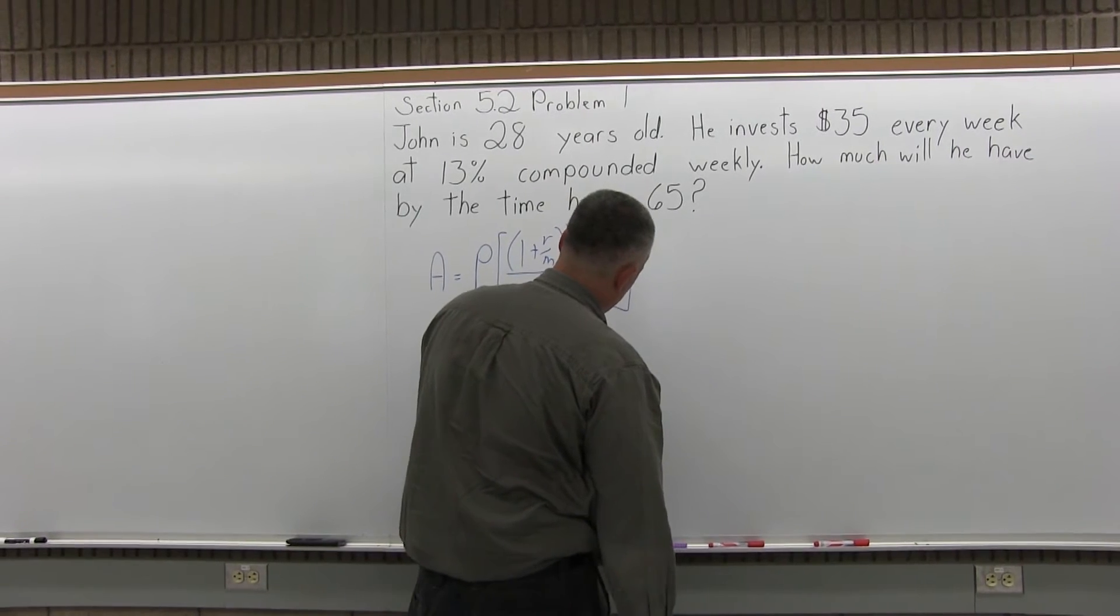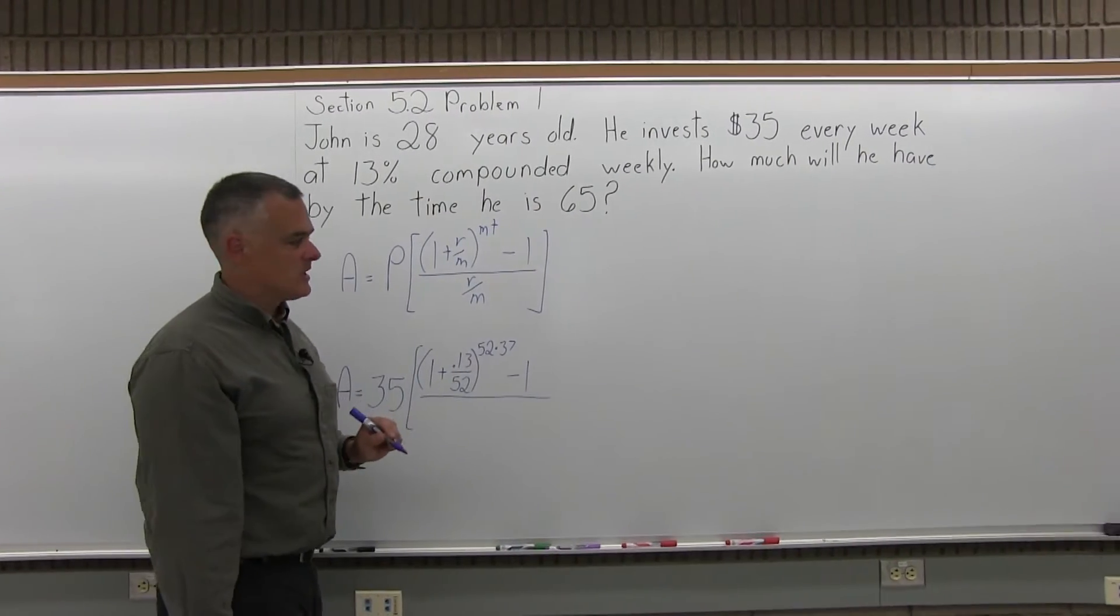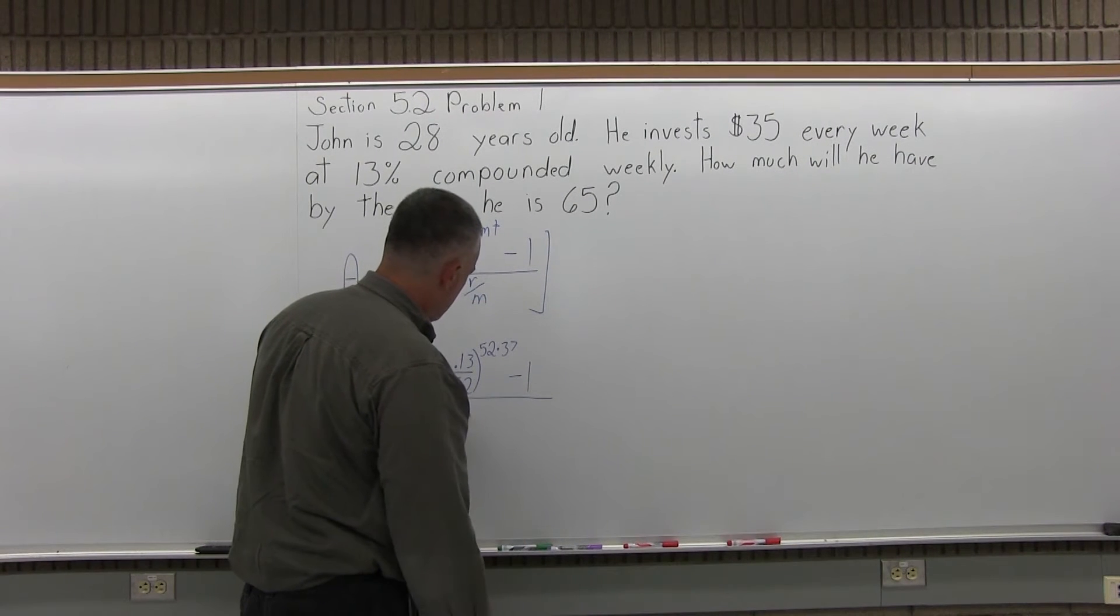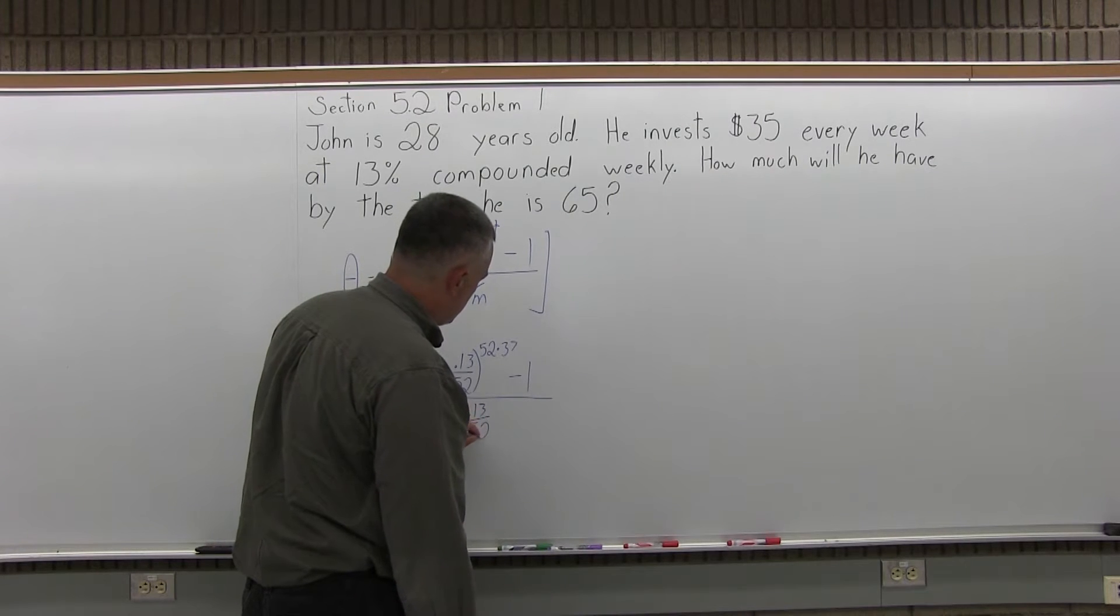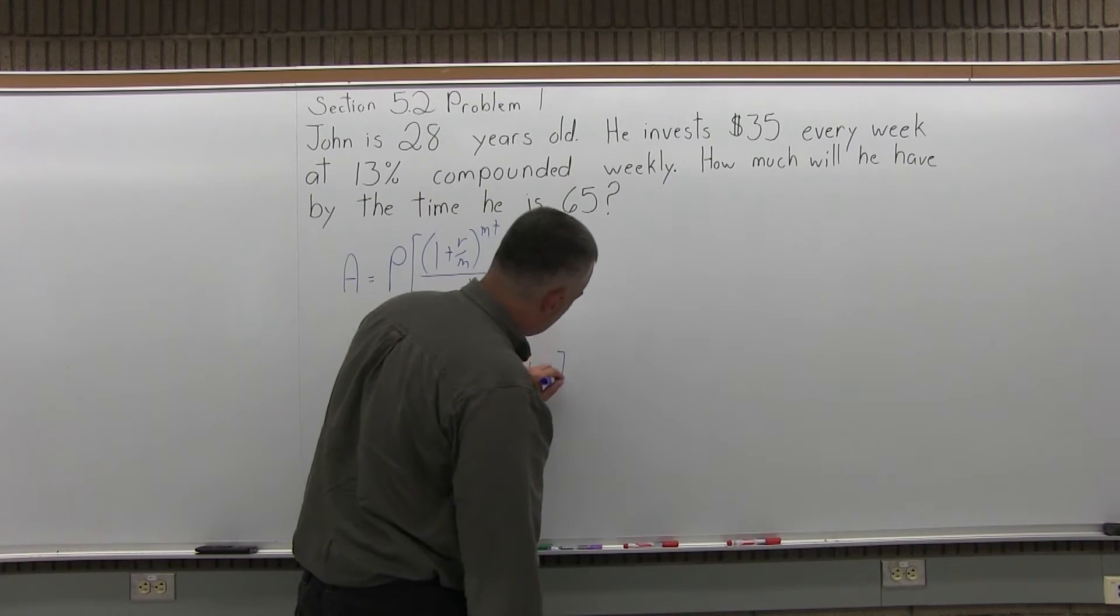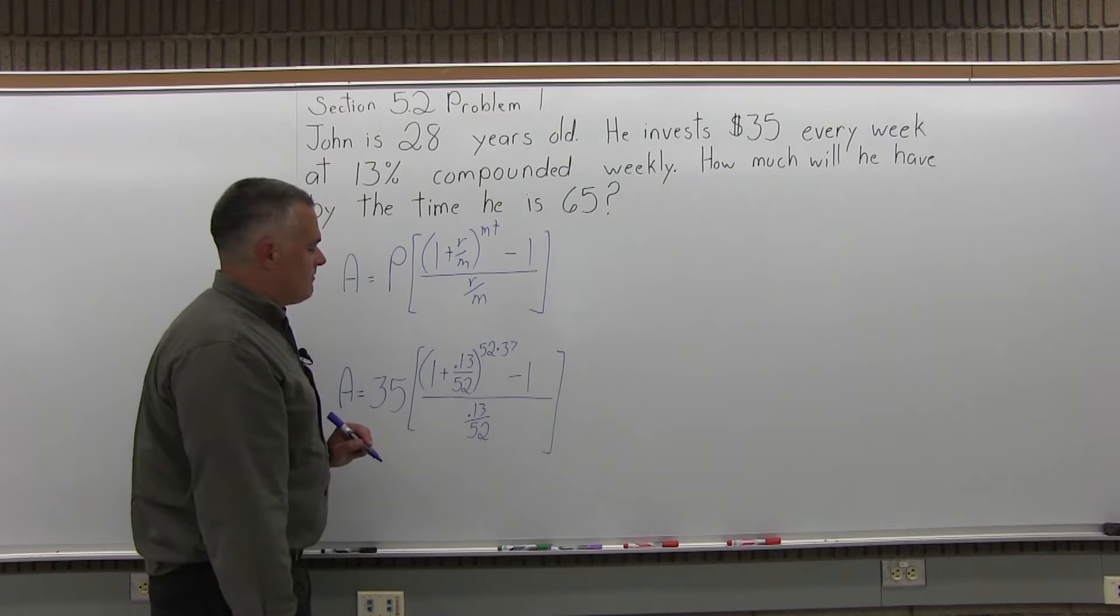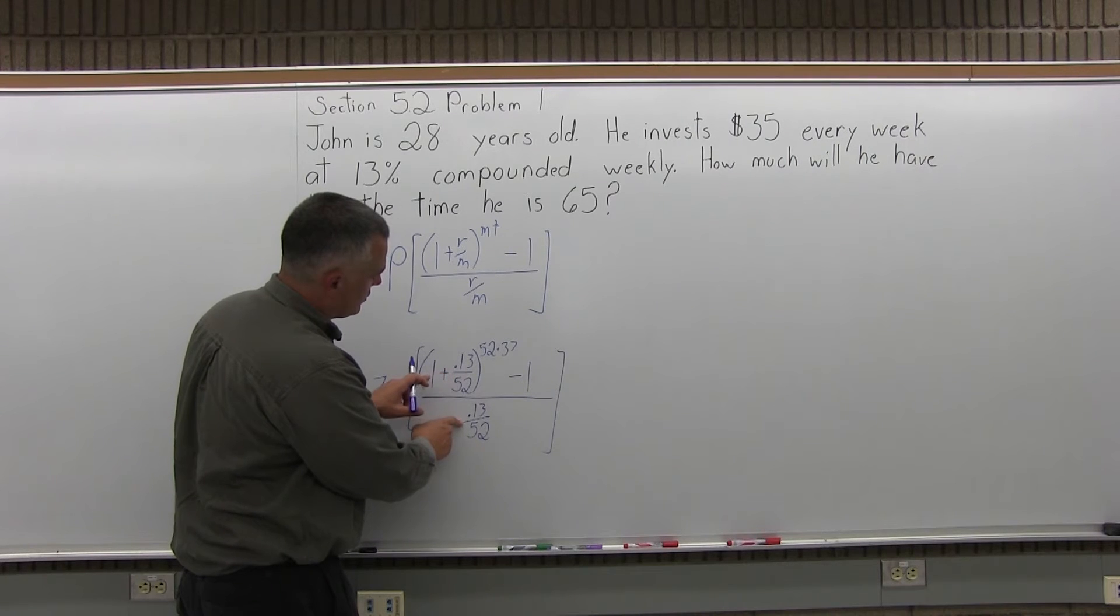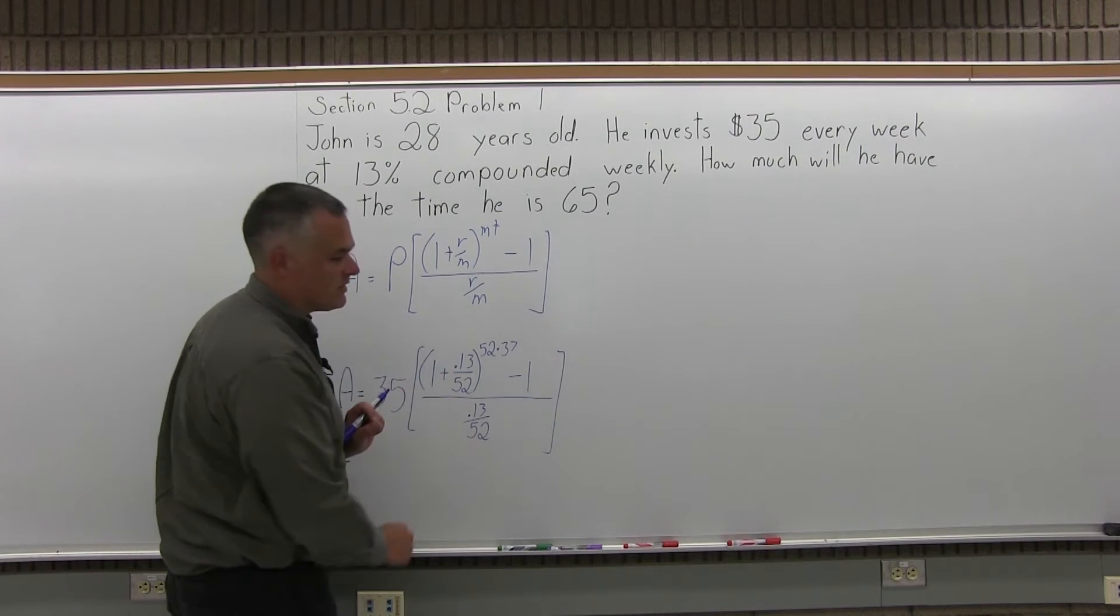And then don't forget in the numerator there's also a minus 1, I do occasionally forget that. Then in the denominator you have r over m, so r, again the rate as a decimal is .13, m number of times compounded per year is 52, and I'll close up those brackets. And typically what you have is the same decimal in the numerator and denominator, and the numerator there's a 1 in front of it, but not in the denominator.